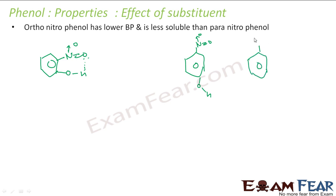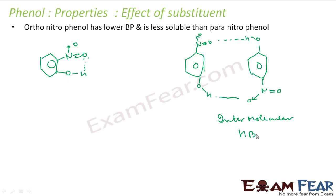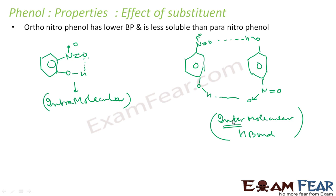For paranitrophenol, intramolecular hydrogen bonding is not possible, but intermolecular hydrogen bonding with neighboring compounds is possible. To help remember the difference between inter and intra, think about the internet versus the intranet. The internet lets you access servers elsewhere — like watching this on YouTube. The intranet is like a college network where you can only access the college website from within the college.